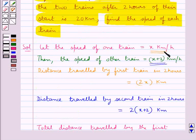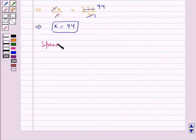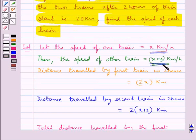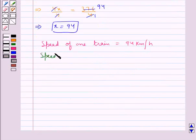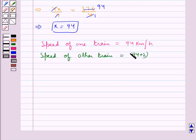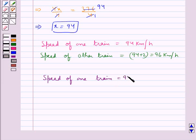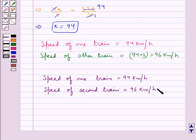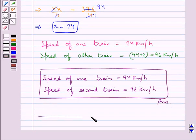We had assumed the speed of one train as x kilometers per hour. Thus, the speed of one train is equal to 94 kilometers per hour. The speed of the other train was x plus 2 kilometers per hour, so the speed of the other train is equal to 94 plus 2, that is 96 kilometers per hour. Our final answer is: speed of one train is 94 km/h and speed of the second train is 96 km/h. This completes the session — hope you understood the solution for this question.